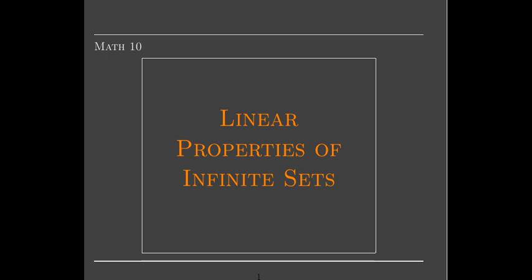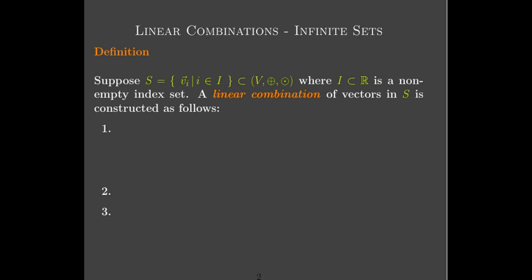For starters, we're going to say, how can we form a linear combination from objects in an infinite set? Our infinite set S could be, for example, a set of the powers of x — x raised to the power of n, where n is any natural number. So that's n starting from 0 and counting upwards: 0, 1, 2. So all powers of x — that would be an infinite set.